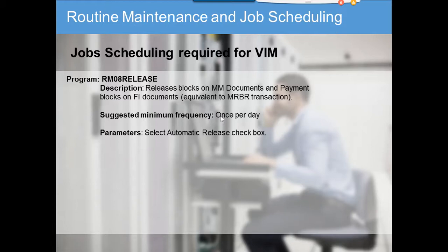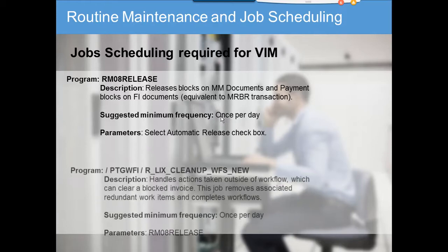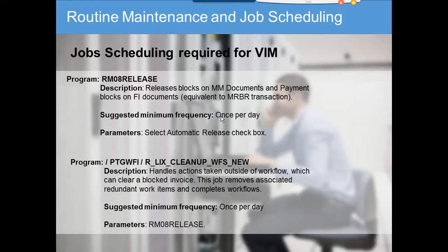The next program handles actions taken outside of workflow which can clear a blocked invoice. This job removes associated redundant work items and completes workflows. For example, suppose something is in someone's inbox for approving a delivery block or a service block because the dollar amount is more than $100,000.